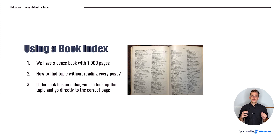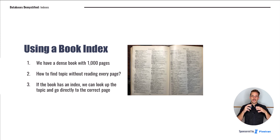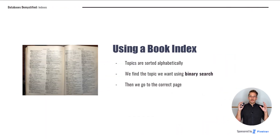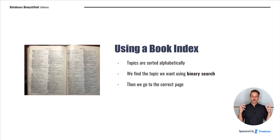So let's get started. Let's imagine that we have a dense textbook with a thousand pages. We want to find a certain topic that we know is in the textbook, but we don't want to flip through every page. In the worst case scenario, we'd have to read every page just to find what we're looking for. However, if the textbook has an index, we can use it to jump quickly to the correct page — many times faster than reading every page. The most important thing to notice is that the index is organized by topic and sorted alphabetically, which allows us to use binary search.